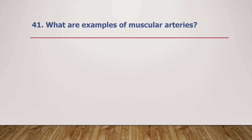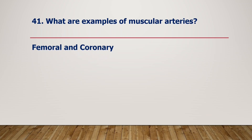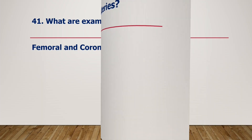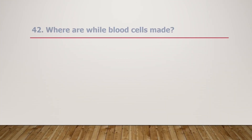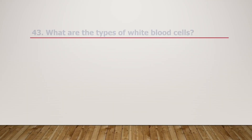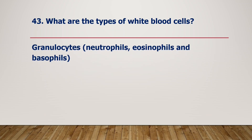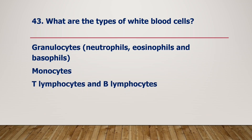What are examples of muscular arteries? Where are white blood cells made? White blood cells are made in bone marrow. What are the types of white blood cells? Granulocytes — that is neutrophils, eosinophils, and basophils — as well as monocytes, T-lymphocytes, and B-lymphocytes.